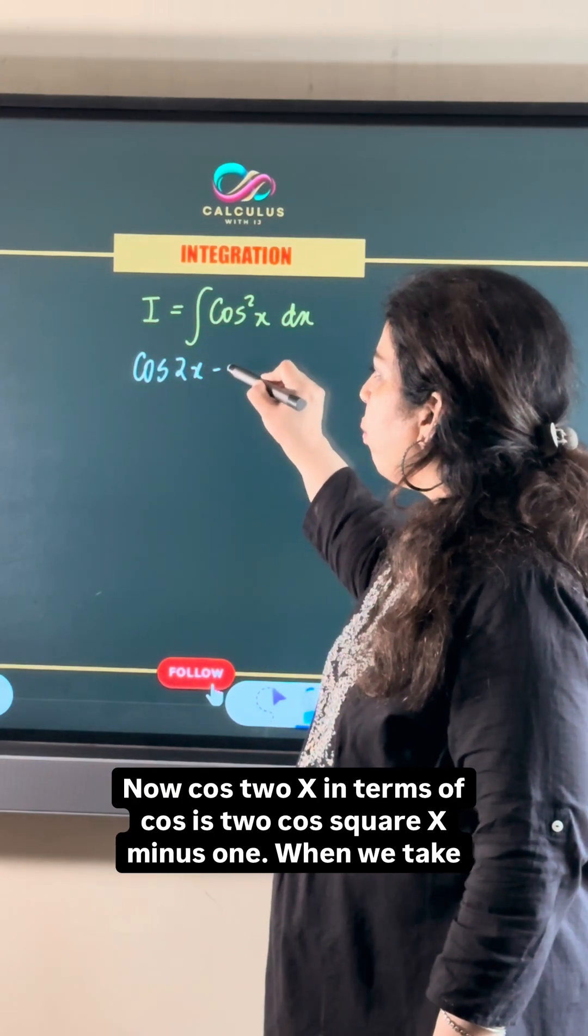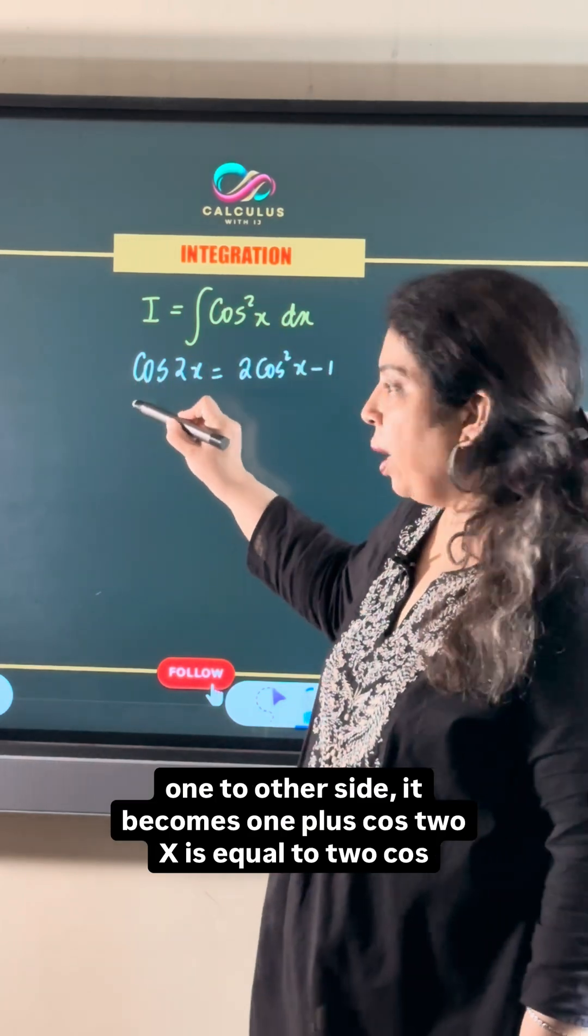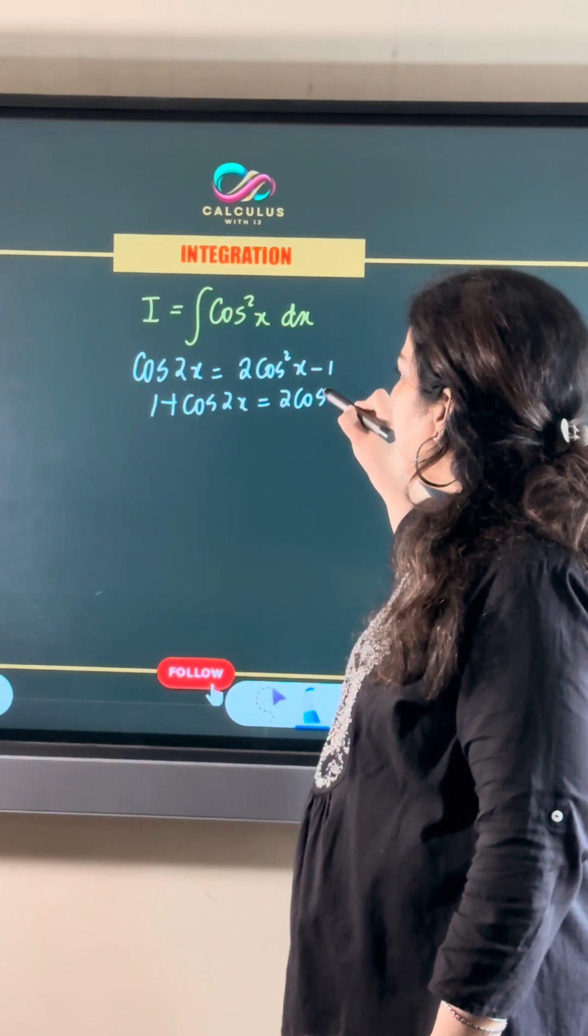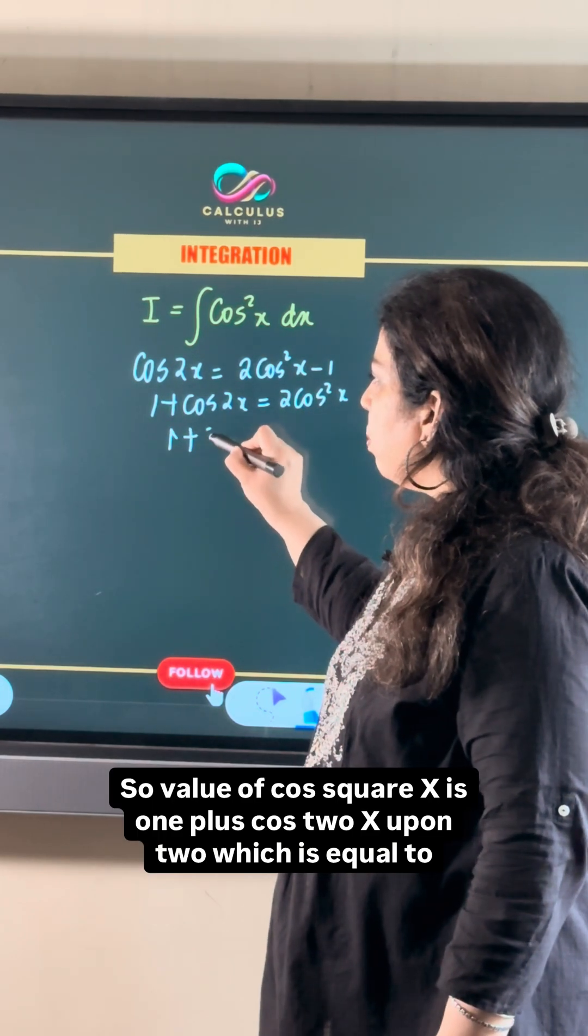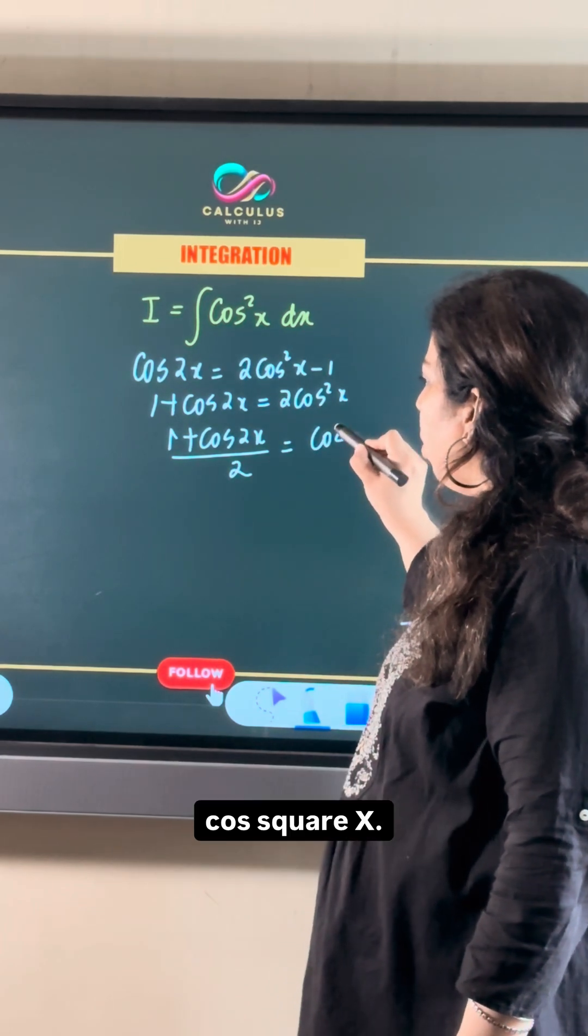Now cos 2x in terms of cos is 2 cos square x minus 1. When we take one to the other side, it becomes 1 plus cos 2x equals 2 cos square x. So the value of cos square x is 1 plus cos 2x upon 2.